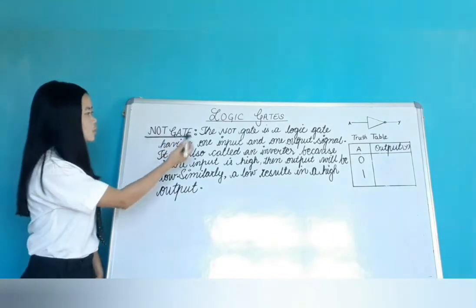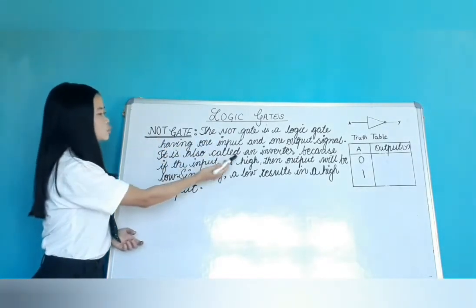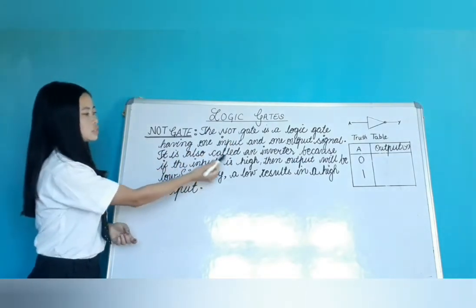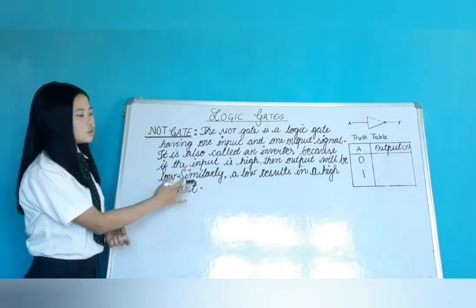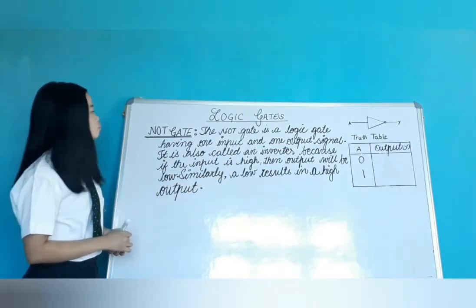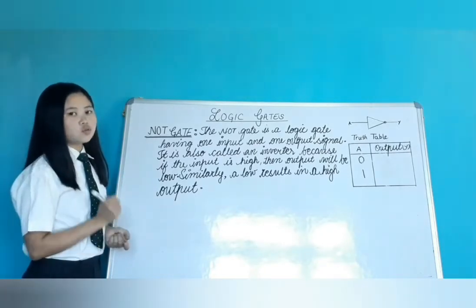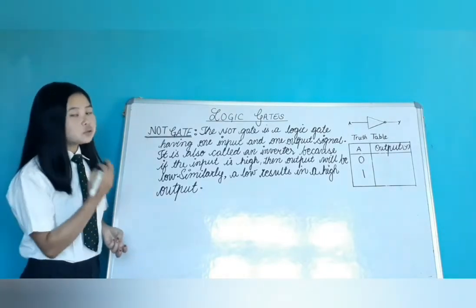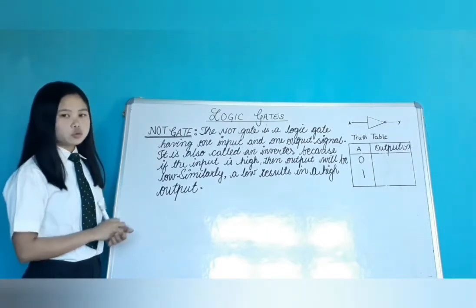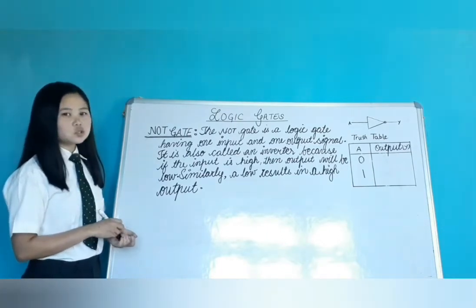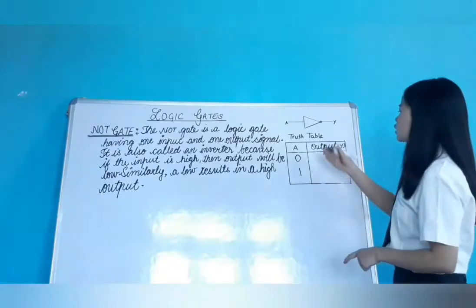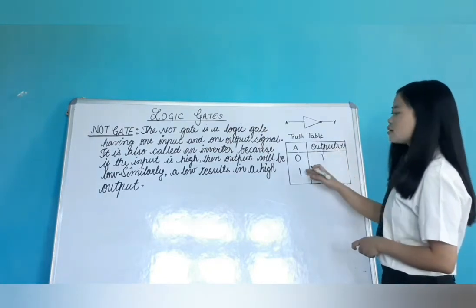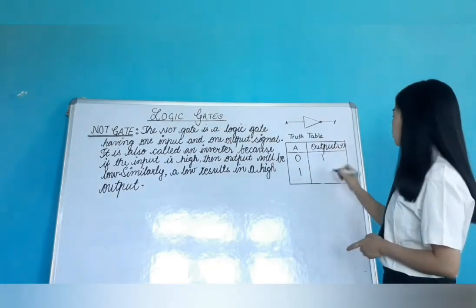Now, we will see NOT gate. The NOT gate is a logic gate having one input and one output signal. It is also called an inverter because if the input is high, then the output will be low. Similarly, a low input results in a high output. In the truth table: first case, input is low, so output will be high. Second case, input is high, so output will be low.